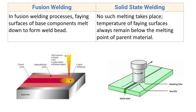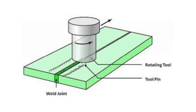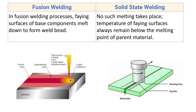In solid state welding, no such melting takes place. The temperature of the faying surface always remains below the melting point of the parent metal. An example of solid state welding is friction stir welding. In solid state welding, the melting of the faying surface does not take place; the temperature always remains below the melting point of the parent component.